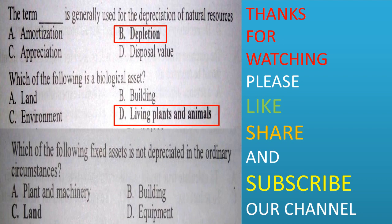Which of the following fixed assets is not depreciated in ordinary circumstances? Plotted machinery, building, land, or equipment. Option C is correct — land is not depreciated. Thanks for watching. Please like the video, share the video, and subscribe to the channel for upcoming videos. Thank you.